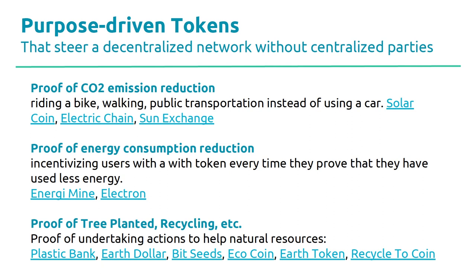Bitcoin showed us how to incentivize the purpose of the network - peer-to-peer money without banks - with a network token and collective value creation equal to individual value creation. We could create any kind of purpose-driven token to incentivize CO2 emission reduction, proof of energy consumption - Solar Chain, Electric Coin, Sun Exchange, Walking Coin, Plastic Bank, proof of pre-planting, recycling. But the question is: how do we design that?